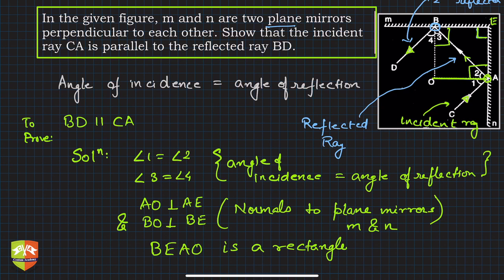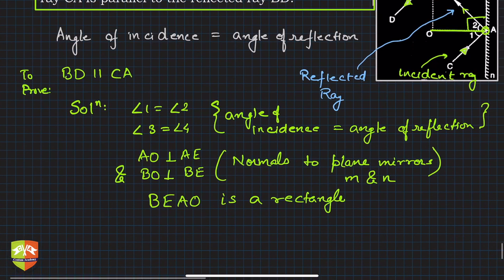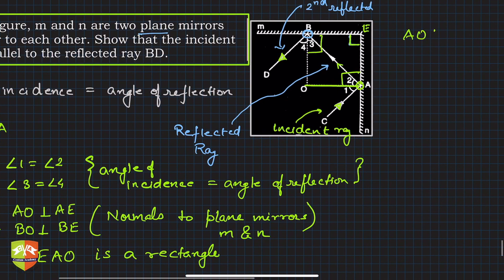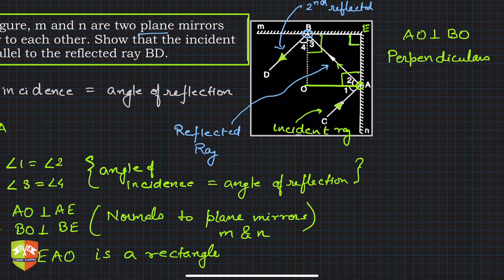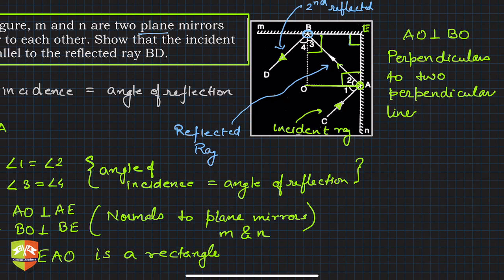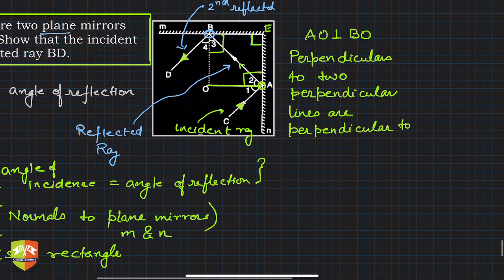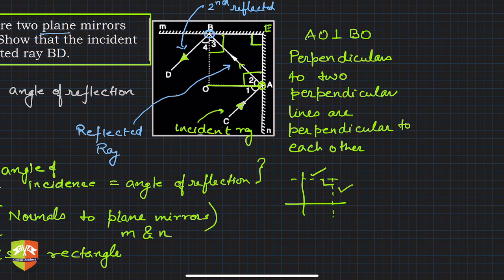Since BEAO is a rectangle, AO is perpendicular to OB. We can also reason this way: perpendiculars drawn to two mutually perpendicular lines are themselves perpendicular to each other. So angle AOB = 90 degrees.